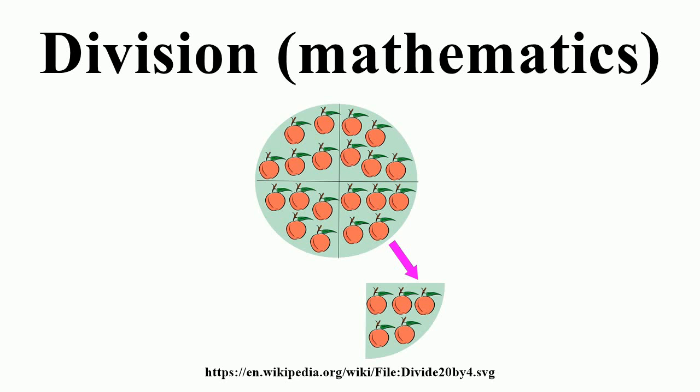Specifically, if b times c equals a, written a equals b times c where b is not zero,